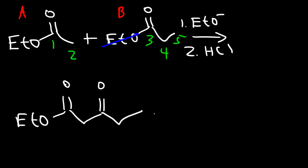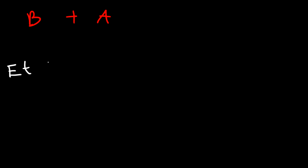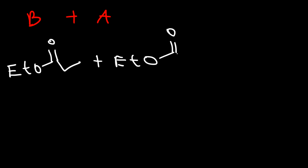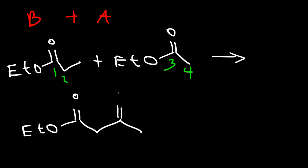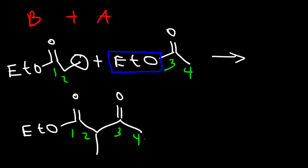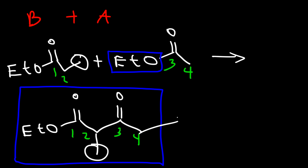Now let's go over the reaction where B reacts with A. B has three carbons on the right, and A has two carbons on the right. The alpha carbon (carbon two) of B connects to the carbonyl carbon of A, so the longest chain will have four carbons. On carbon three we're going to have a double bond O, and notice that we have a methyl group on carbon two. So this is carbon one, two, three, and four. This product is different than the other product, and that's the product we get when B reacts with A.